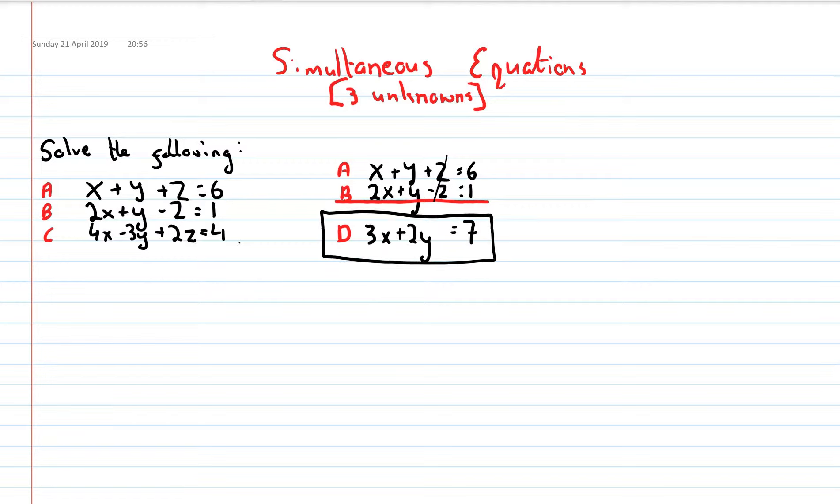Next then, I'm going to take two other equations over here, and I'm going to use these to form equation E. Equation B and equation C, and it's 2x plus y minus z equals 1, and 4x minus 3y plus 2z equals 4.